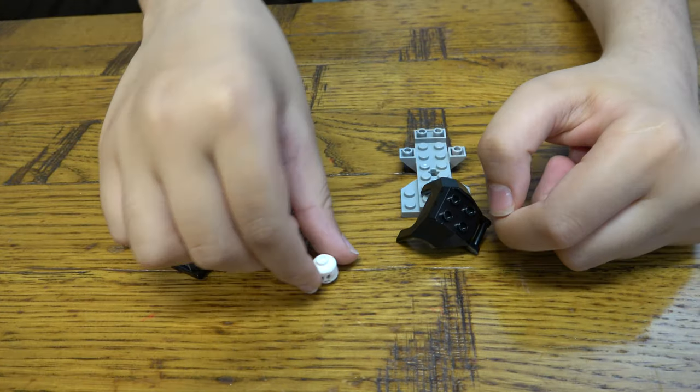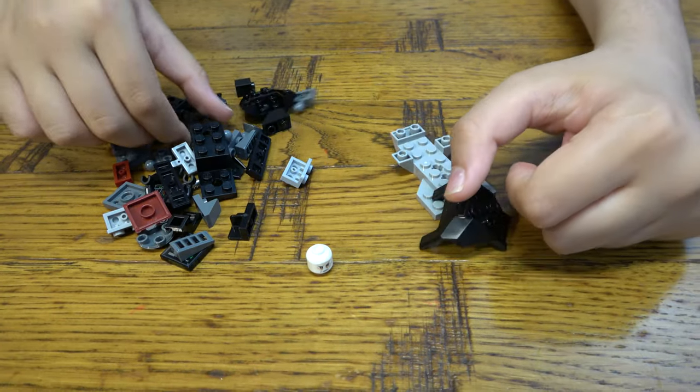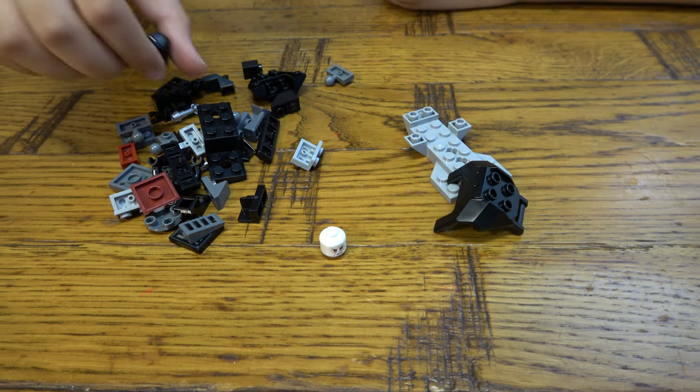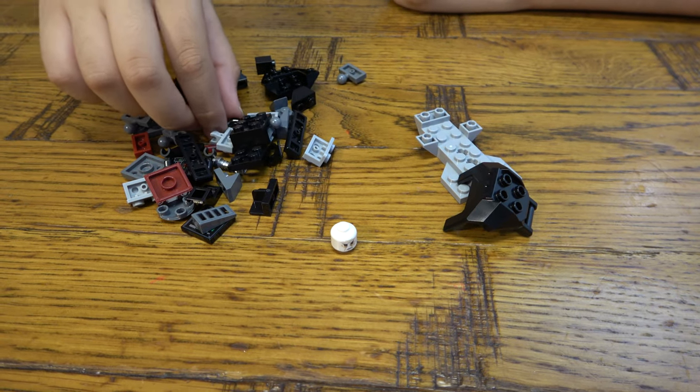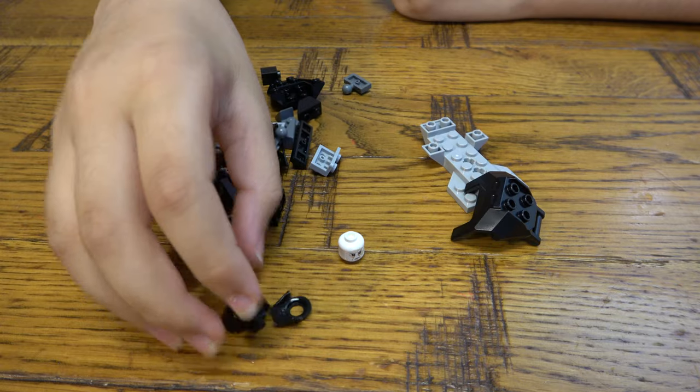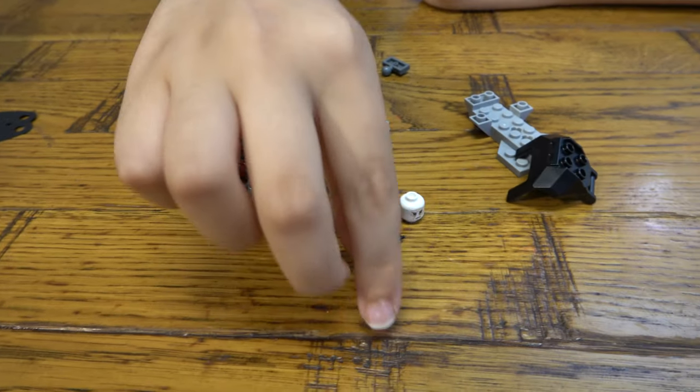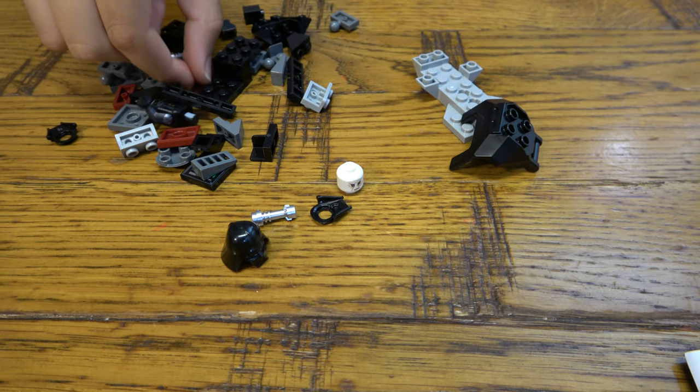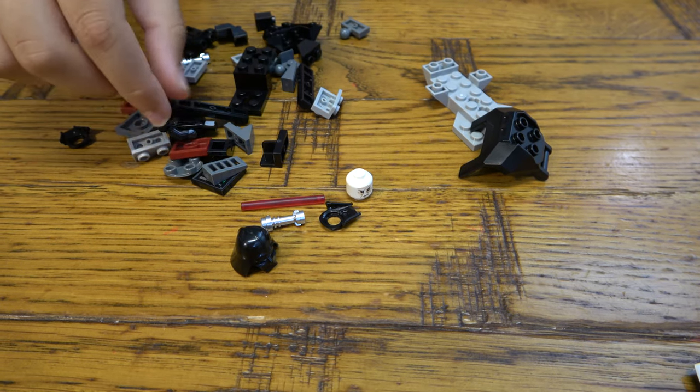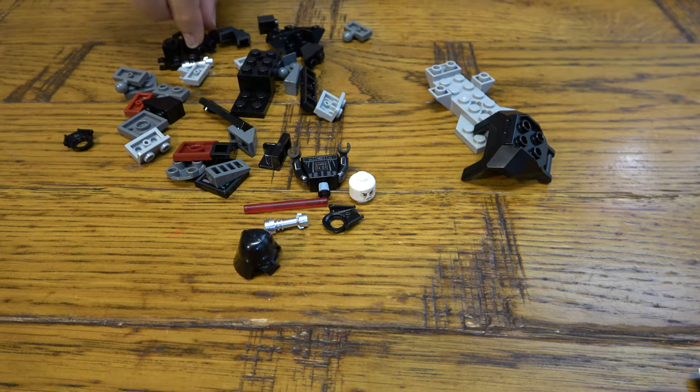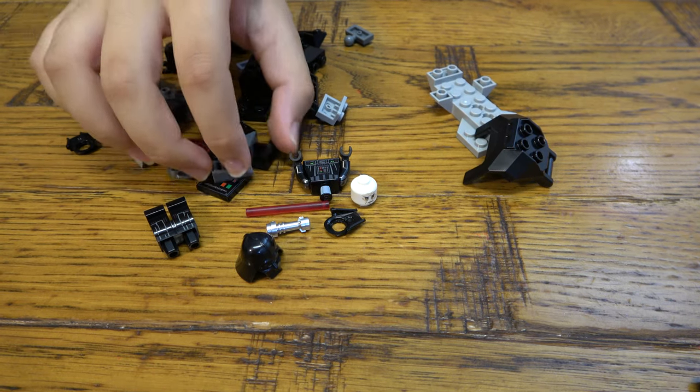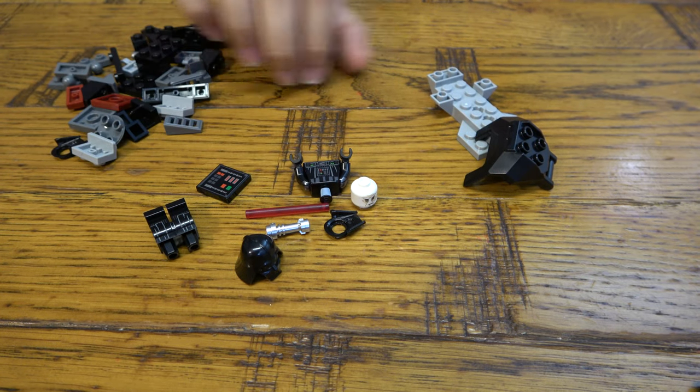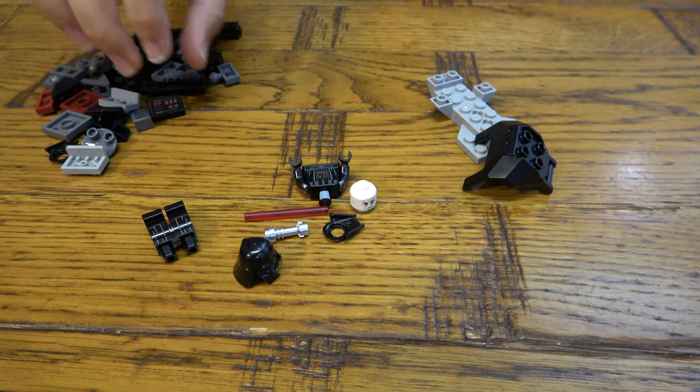And here we have it, Darth Vader's head. And this is his mask piece. There's two of them, one there. More of his mask pieces, I'll just use one. His lightsaber blade. Okay, so, here we have it, guys. Darth Vader.